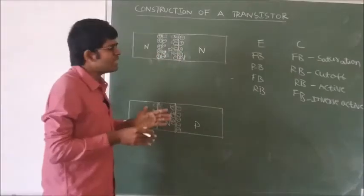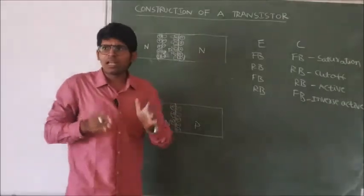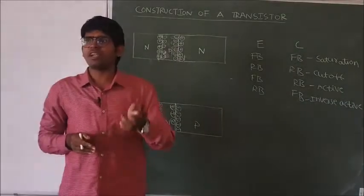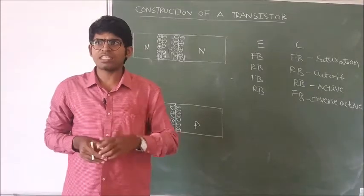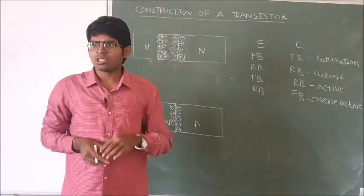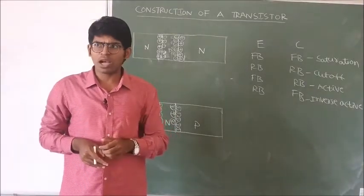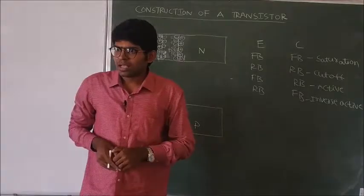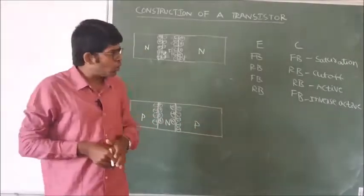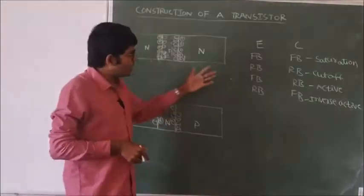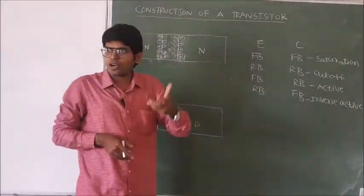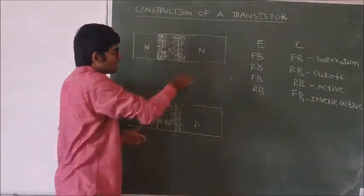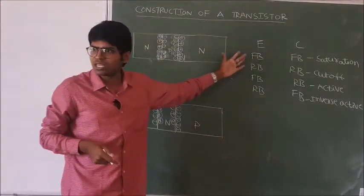When the transistor was first invented, the scientists — William Shockley, Bardeen, and Brattain — were eager to know the behavior of each biasing combination. They checked all four different combinations. In the first combination — the saturation region — they connected the positive terminal of the battery to the P-type and the negative terminal to the N-type for both junctions.